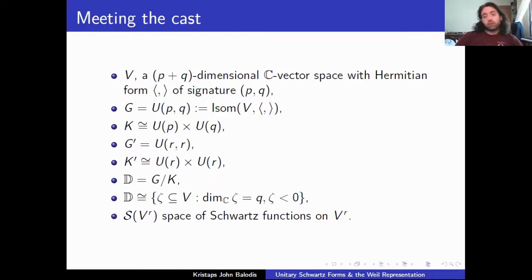And we're also going to be thinking about Schwartz spaces of functions. So here, V^r just means we're direct summing V with itself r times. And S(V^r) is the space of Schwartz functions on V. So this can actually be defined for any vector space. And it just means rapidly decaying functions in some certain sense.